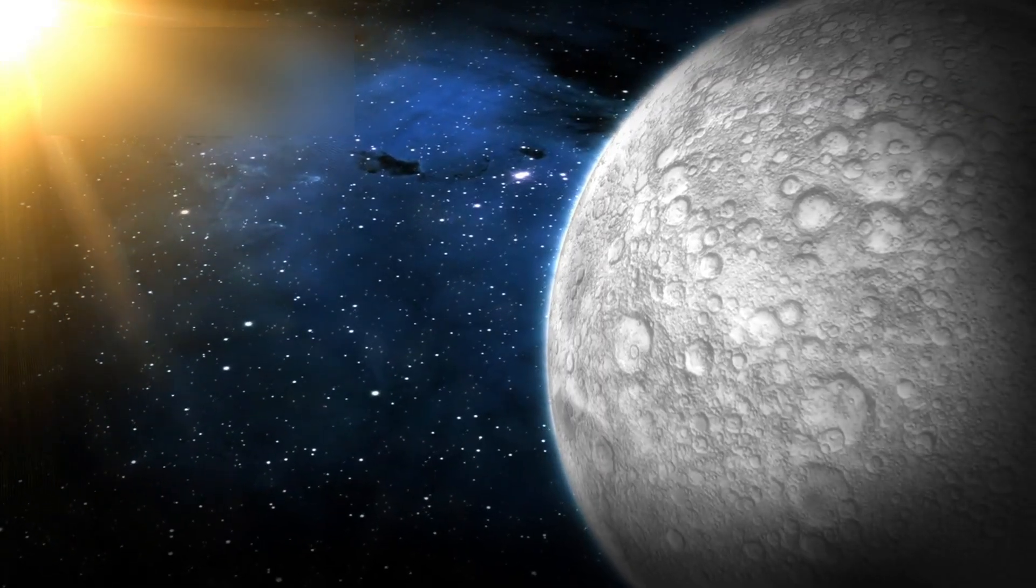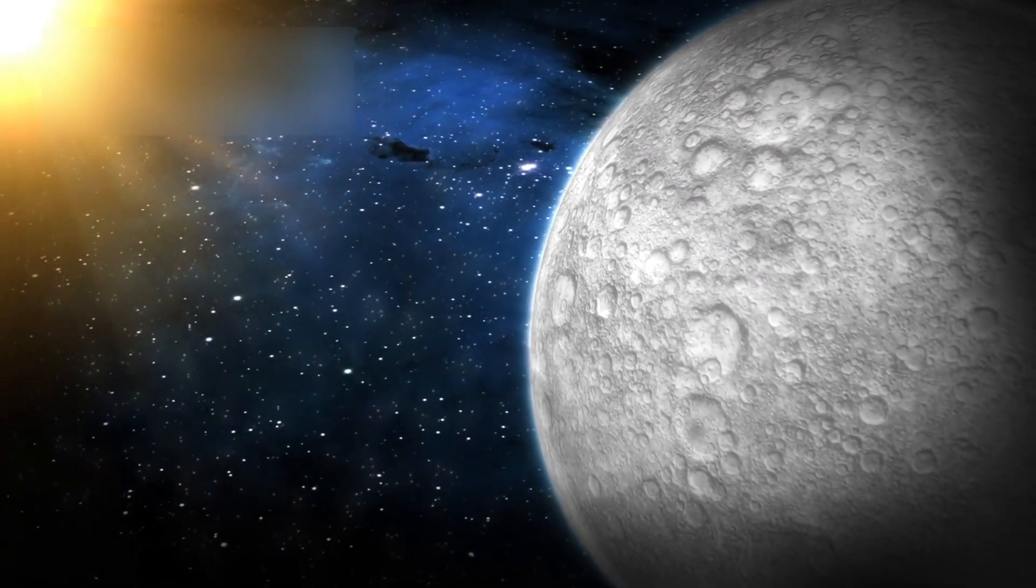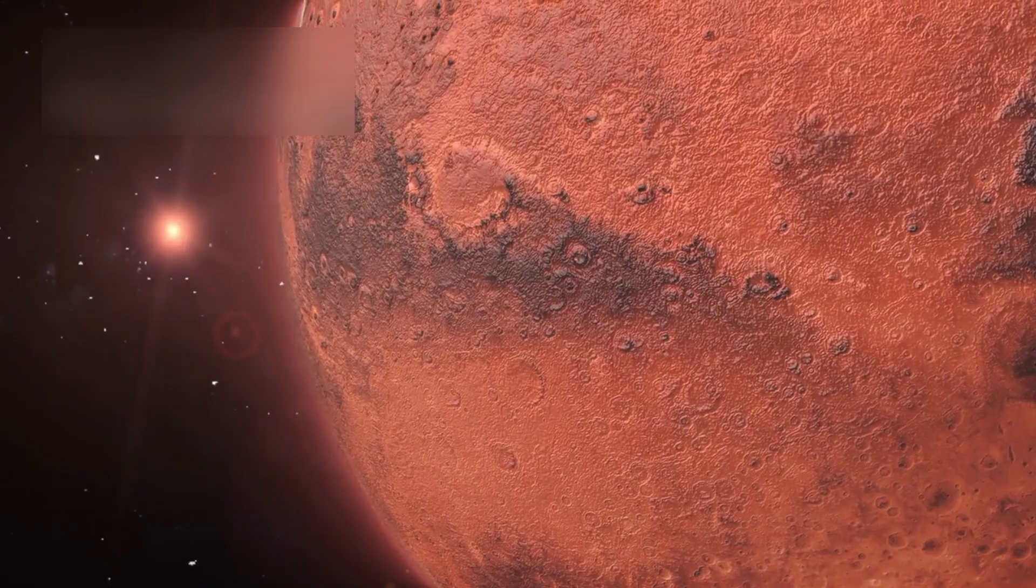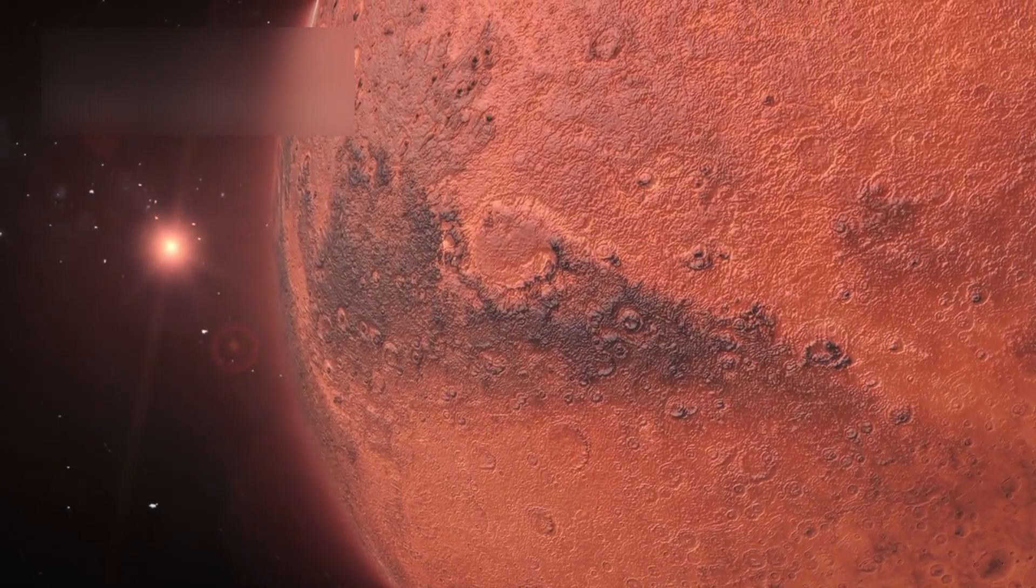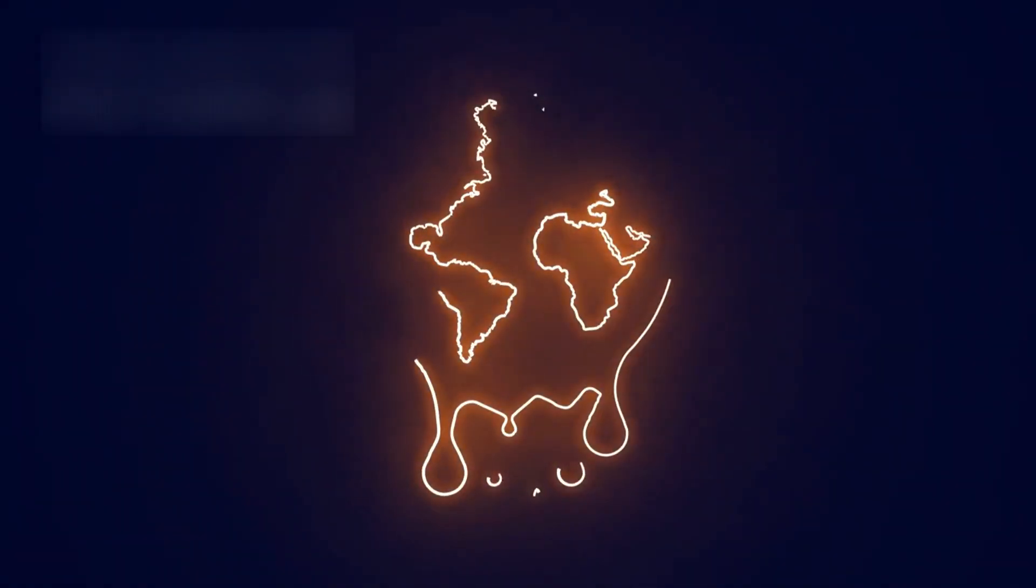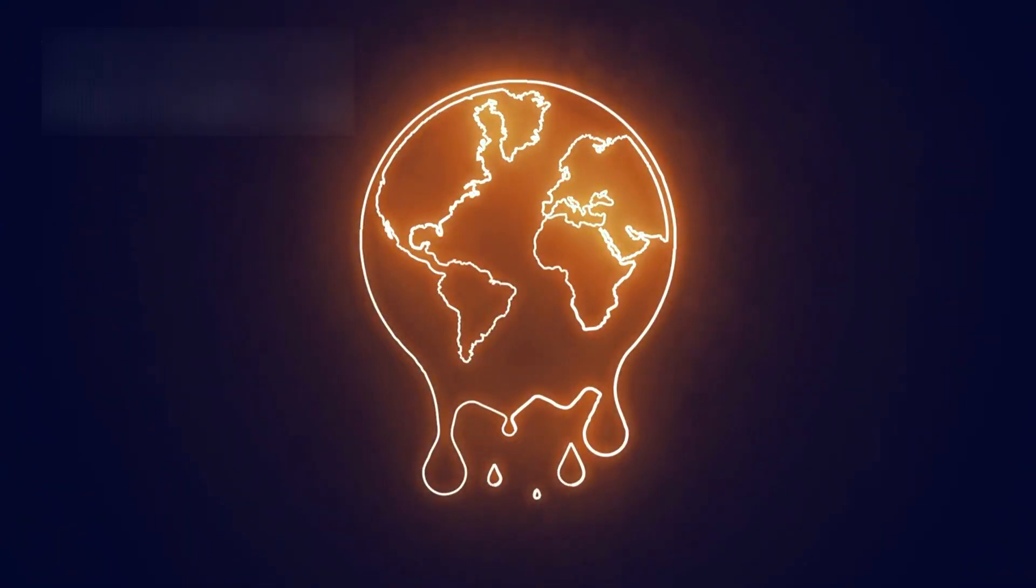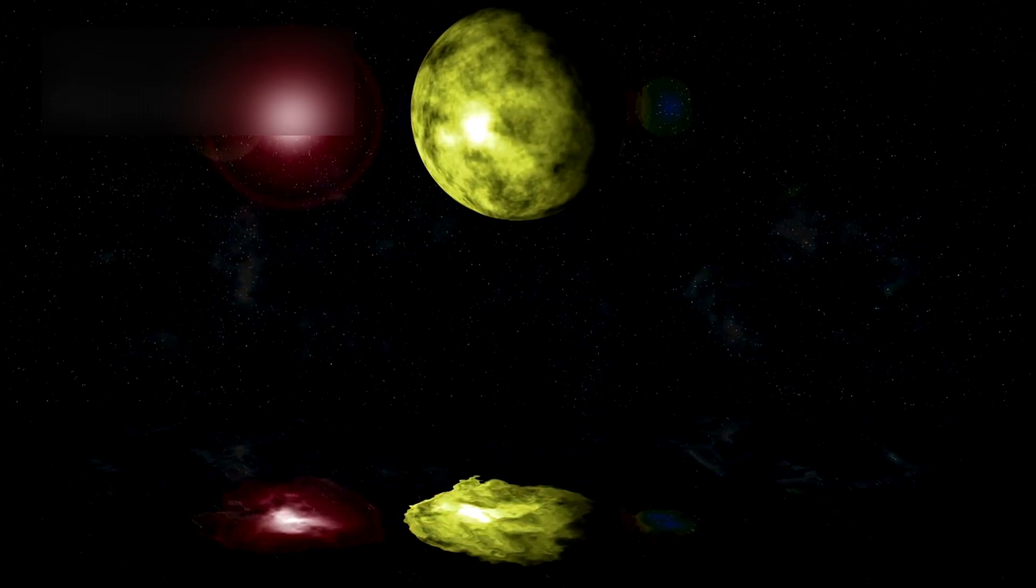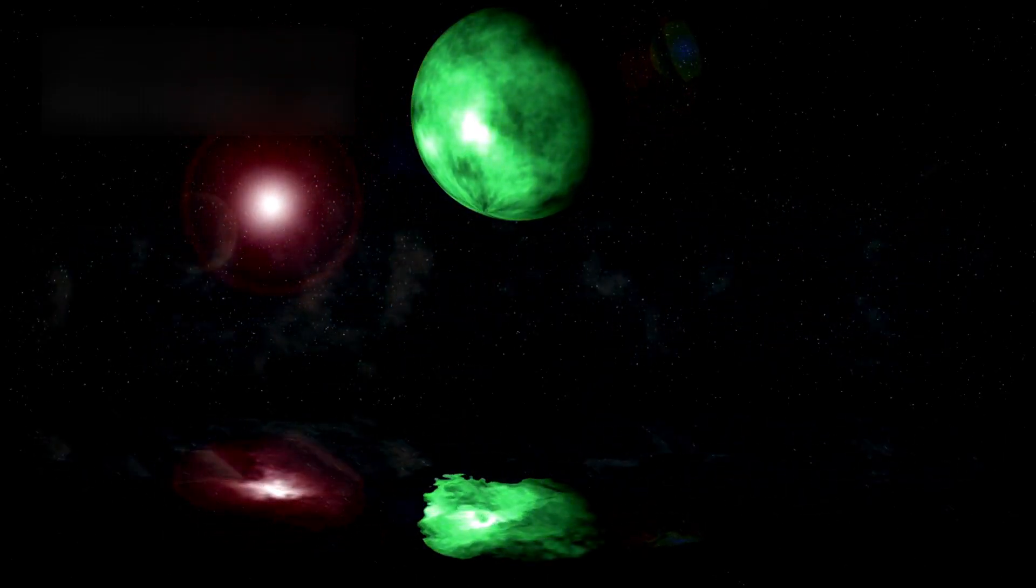Pluto also shares a fascinating connection with its largest moon, Charon. Unlike most planet-moon pairs, Pluto and Charon orbit around a common point in space, locked together in a gravitational dance. This tug-of-war causes tidal flexing within Pluto's crust, potentially stirring its interior and generating extra heat. Some scientists even suggest that this interaction could help sustain that underground ocean, and possibly, the chemistry of life itself.